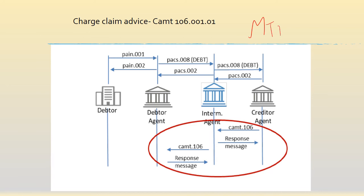In the context of SwiftMX, this is known as CAMT.106. So when a PACS.008 is transmitted, the creditor agent sends a CAMT.106 because the creditor agent's charges need to be debited from the debtor. The CAMT.106 is a mechanism — a charge claim advice sent by the creditor agent to the debtor agent so that the debtor can be charged accordingly.